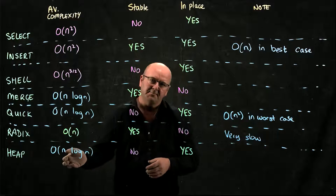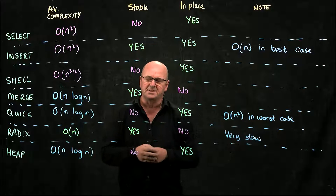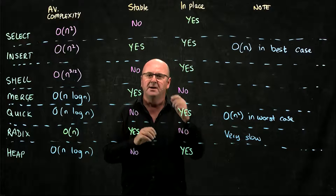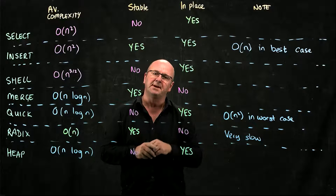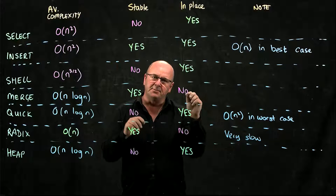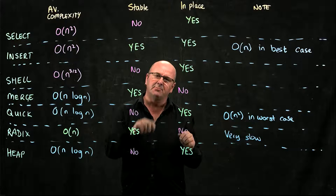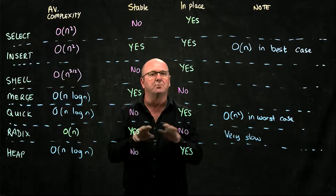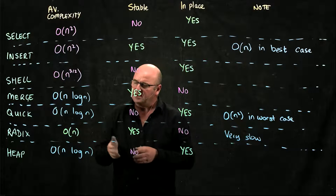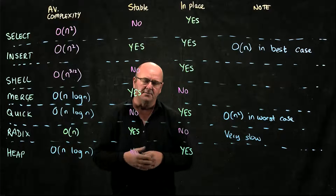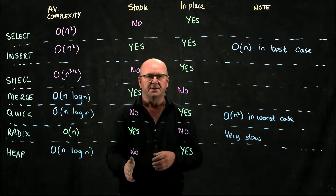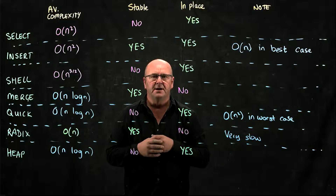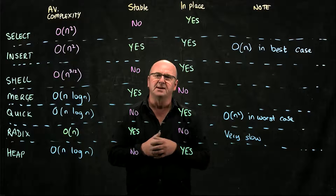Finally, we have the heap sort, which we saw when we were talking about heaps. In heap sort, we take a max heap or a min heap and keep removing the number from the top of the heap. When we do that removal, we put the last element added to the heap back at the top, and it has to trickle down. During that trickle down, it gets compared to one half of the heap. So heap sort has O(n log n) complexity. It's not a stable sort, but it is an in-place sort, and in the heap video we saw how to do heap sort using an array.